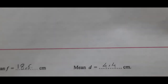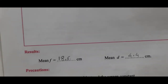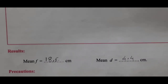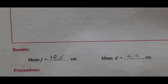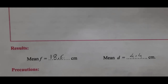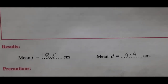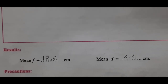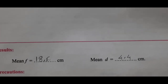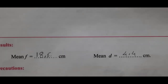The final results are: the mean focal length F of the convex lens equals 18.6 cm, and the mean value of small d — the size of the object (filament) — equals 4.4 cm.